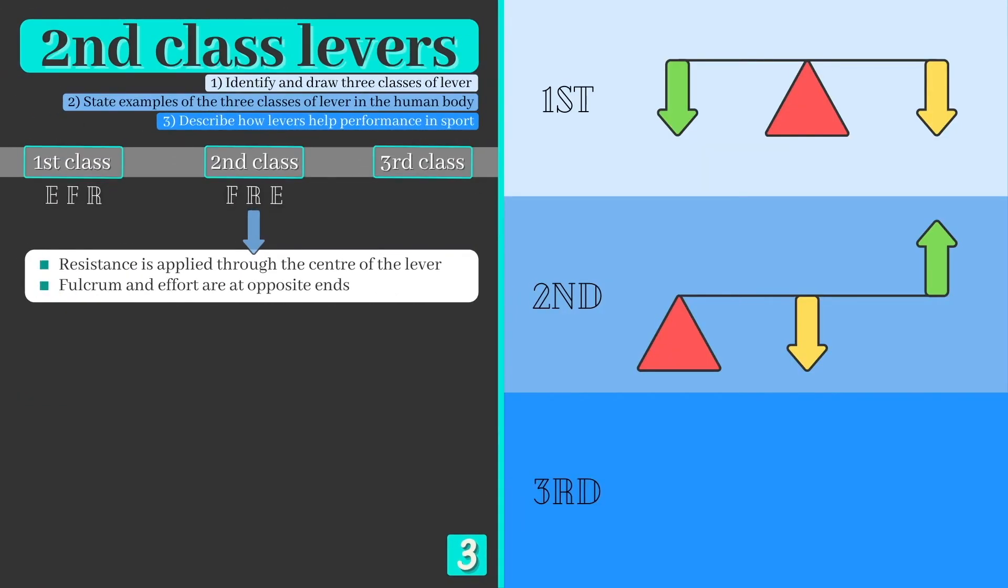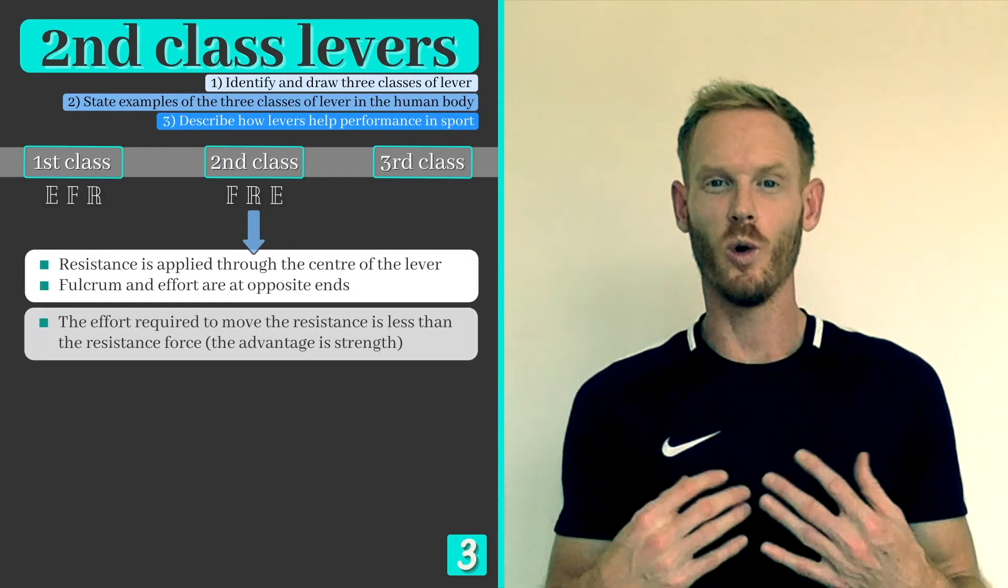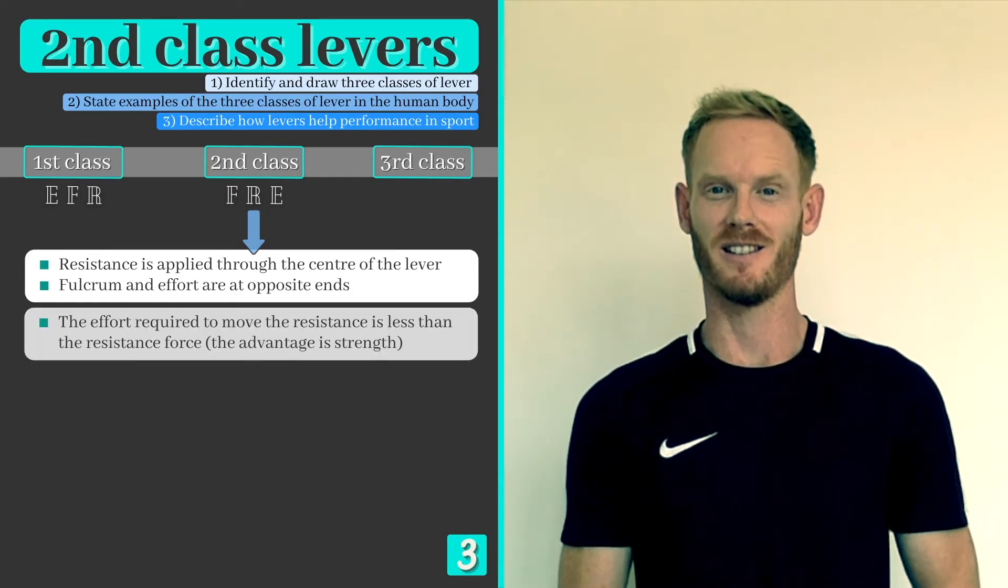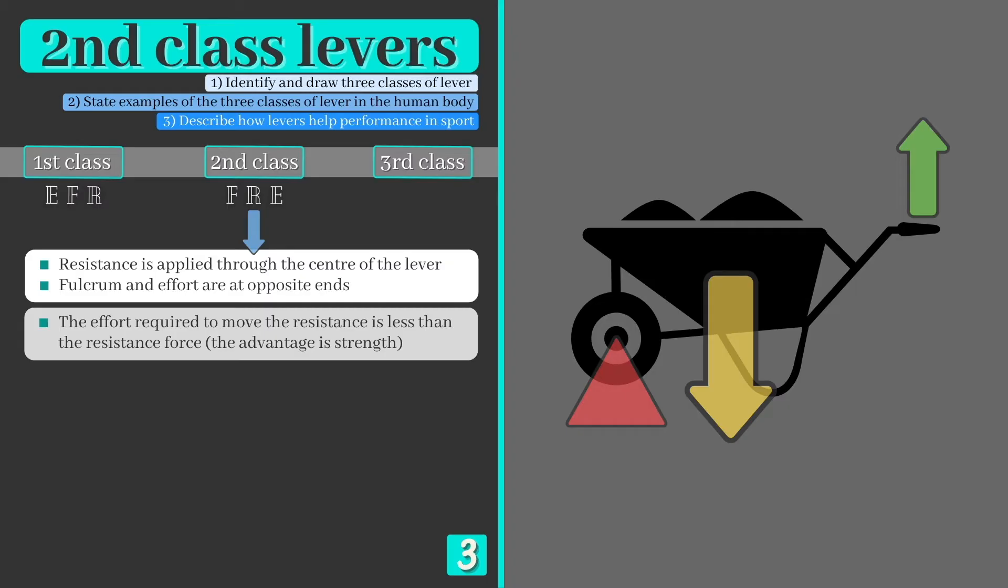A second class lever starts with the fulcrum at one end, with the resistance force acting through the middle, and effort applied to the other end. The order of these components means that the effort needed to move the resistance is actually less than the resistance force itself.